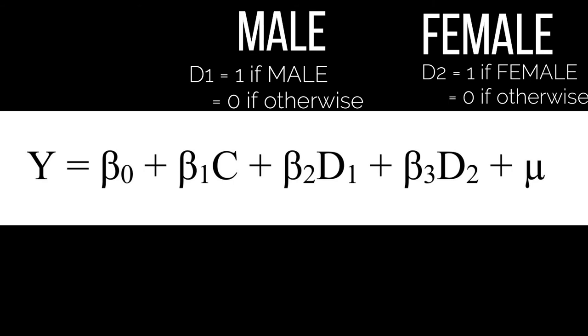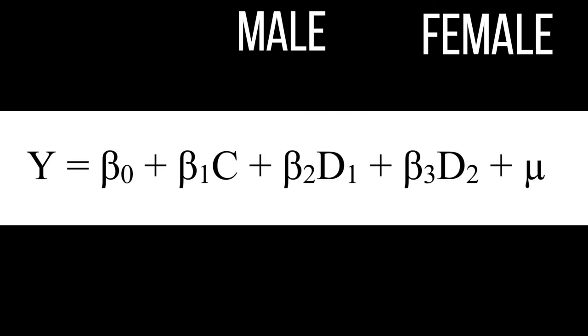We do not need to include a dummy variable for the option other because if D₁ is 0 and D₂ is 0, it automatically means that the person belongs to the category other.